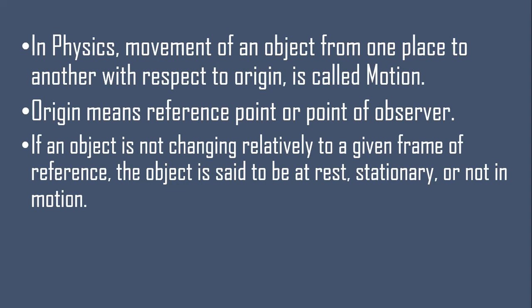Ek place se doosari place mein agar koi bhi object move kerta hai toh hum usse motion bolenge. Origin means reference point — jis point se woh move kera hai. Now, suppose if an object is not changing position relative to a given frame of reference, if the object is not moving within a period of time, so we say the object is at rest, stationary, or not in motion.